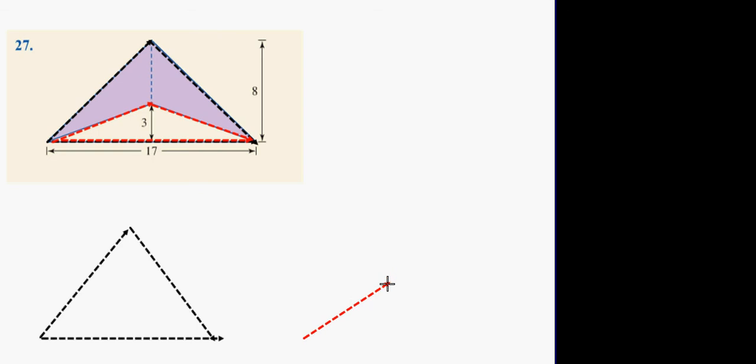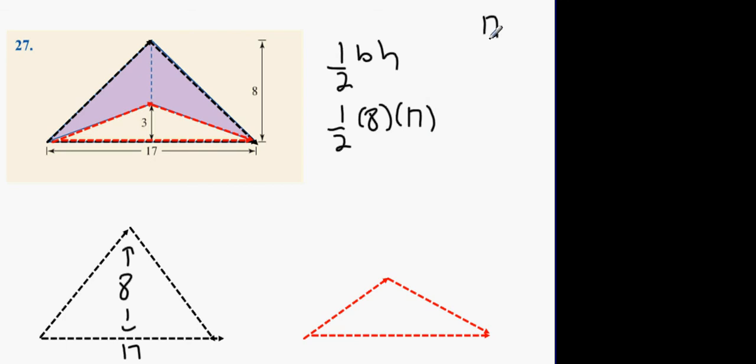Now this one has a height of 8 and a base of 17. It's a half base by height, which is going to be a half 8 by 17. Same thing as 17 multiplied by 4, because half of 8 is 4. 68. So 68 meters squared.